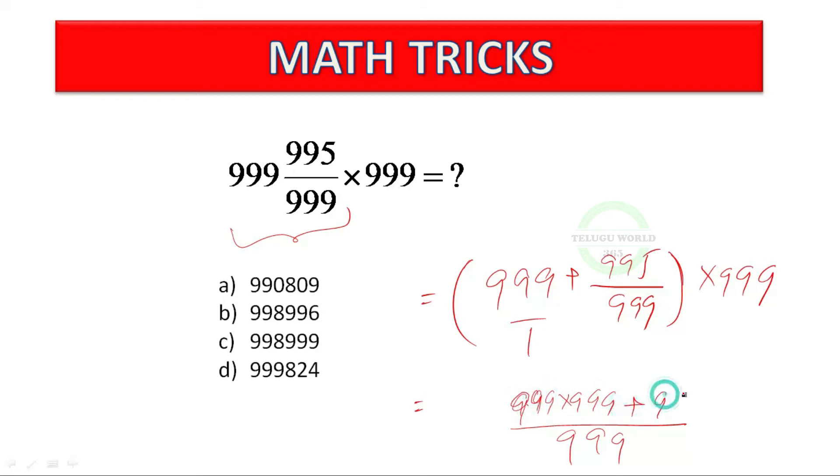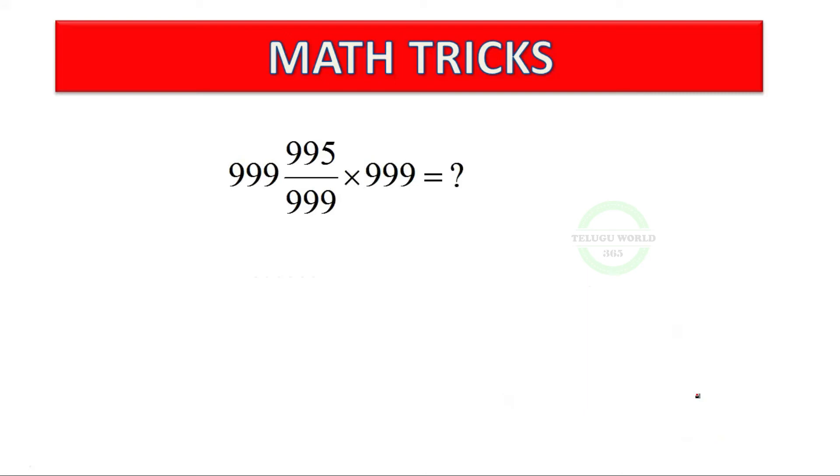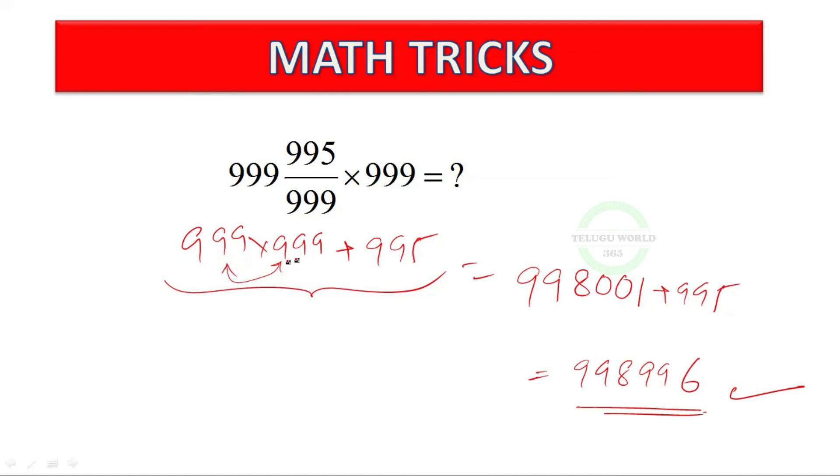If you have big numbers, this is very easy to add and now it gets cancelled, the remaining is 9 times 999. So 9 times 999, 99 plus 995 we get the answer. We have shortcut, the answer is 99501 plus 995. 996, so this is our answer.